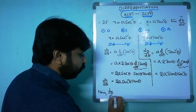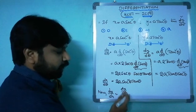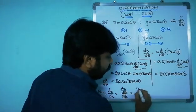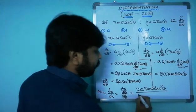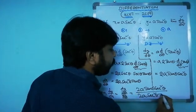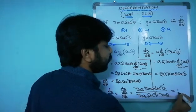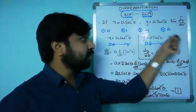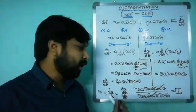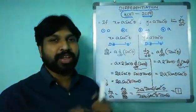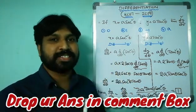Now dy/dx = (dy/dθ)/(dx/dθ) = (2a·tan θ·sec²θ)/(2a·sec²θ·tan θ). The 2a, tan θ, and sec²θ all cancel, giving dy/dx = 1. But wait — they are asking d²y/dx², not dy/dx. Since dy/dx = 1, look at what d²y/dx² equals and drop your answer in the comments.